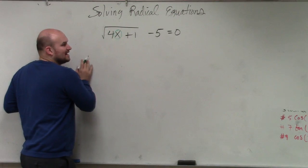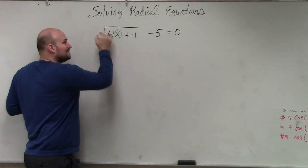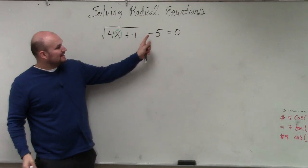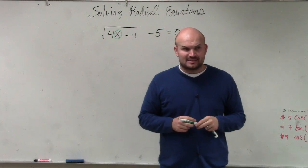But you guys can see right now, this variable, my variable x is being multiplied by 4, it's being added by 1, then I'm taking the square root of all of that, and the last operation is I'm subtracting by 5. So there's a lot of things that are going on with that x, correct?